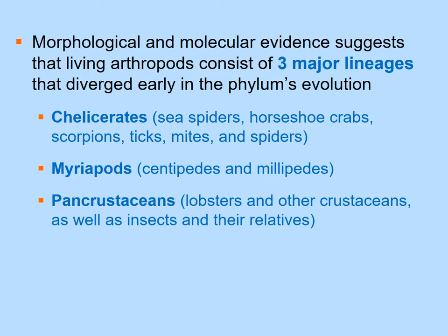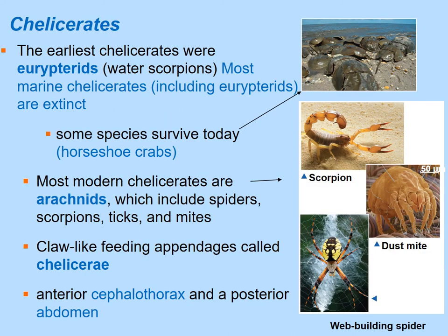Arthropods are divided into three major lineages that diverged early in evolution: Chelicerata (spiders, horseshoe crabs, ticks, mites, scorpions), Myriapoda (centipedes and millipedes), and Pancrustacea (lobsters, other crustaceans, and insects).